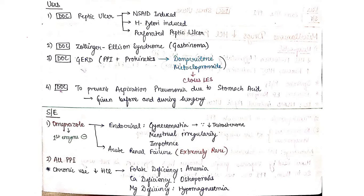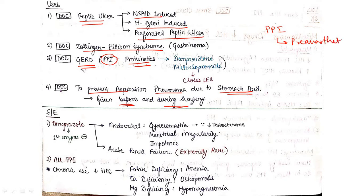Now what are the uses of PPI? PPIs are the drug of choice for peptic ulcer, whether it is NSAID-induced or H. pylori-induced or perforated peptic ulcer. It is also drug of choice for Zollinger-Ellison syndrome. It is also drug of choice for GERD. We give PPI along with prokinetics. It is also drug of choice to prevent aspiration pneumonia due to stomach acid. It is given before and during surgery. Remember, PPI also comes under preanesthetic medication. Just name some preanesthetic medication in the comment box - some preanesthetic medication, what are the categories of preanesthetic medication.